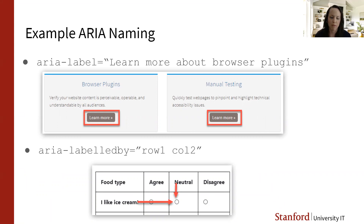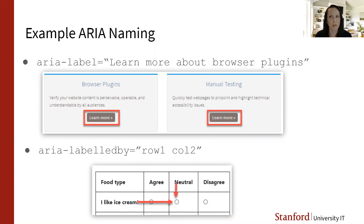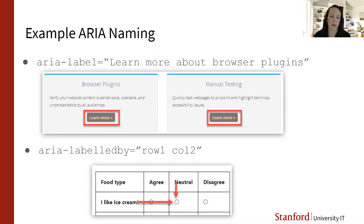You can also use ARIA for naming. Here I've got two sections with headings and a 'learn more' link under each. If a screen reader user tabs through links or pulls up a list of links, they just hear 'learn more,' which doesn't tell you where you're going or what you'll learn more about. You'd have to inspect the surrounding content to figure that out. So you can use ARIA to override that link text and add more information, so someone might instead hear 'learn more about browser plugins' or 'learn more about manual testing.'